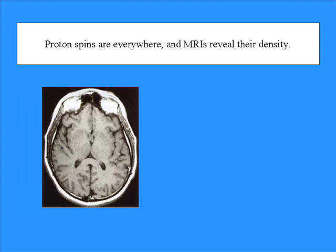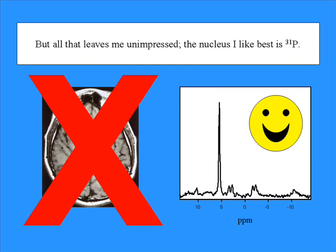Proton spins are everywhere, and MRIs reveal their density. But all that leaves me unimpressed, the nucleus I like best is 31P.